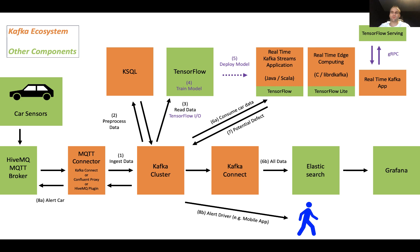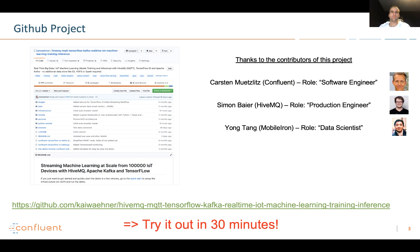Then we deploy this model to our Kafka client application where we do real-time predictions at scale for millions of messages in a reliable and scalable way. I will demonstrate a GitHub project — you can go to this project and try it out yourself. It's pretty straightforward. It takes only around 30 minutes to get started and it's just running a few commands and scripts.